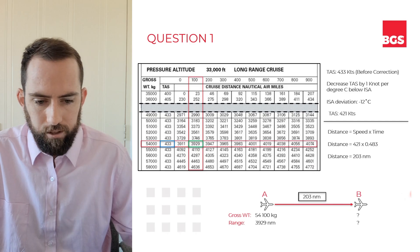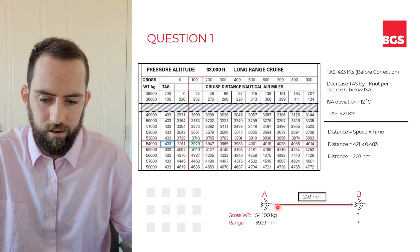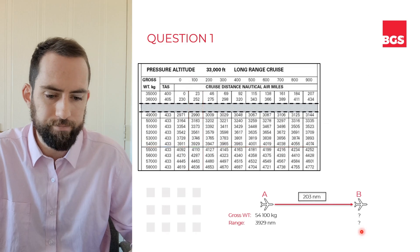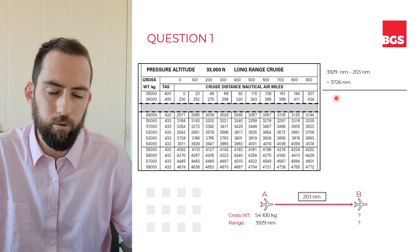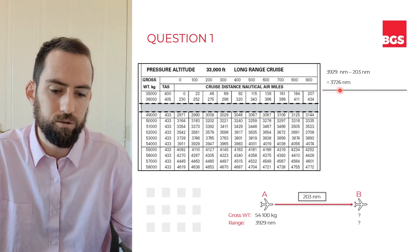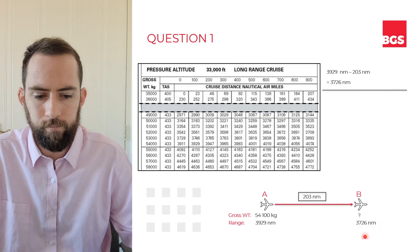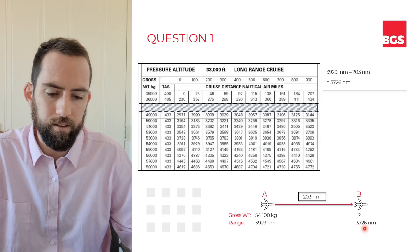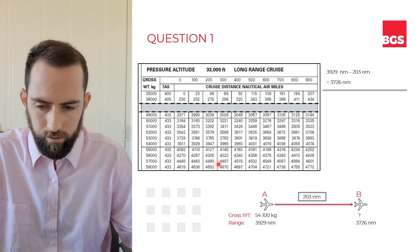So if we had that gross weight at A with a possible range of 3,929 nautical miles and flew for 203 nautical miles, what would our new range be at B? Just subtract one from the other — that gives us a range of 3,726 nautical miles at B. Now we need to go back into the table and search for the figure that approximates as closely as possible to this value.